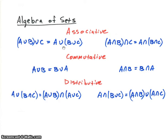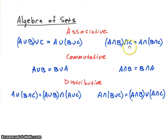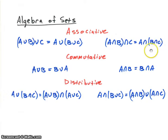Because of the associative property, we could do the union of B and C first, and then the union with A. We have a similar property for intersection: A intersect B, then intersect C, is the same as A intersect with the quantity B intersect C. All of these properties have duals — one on the left for union and one on the right for intersect.